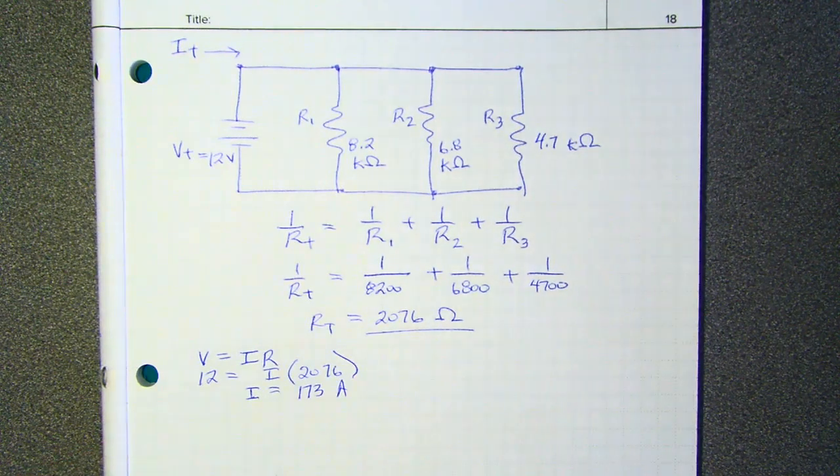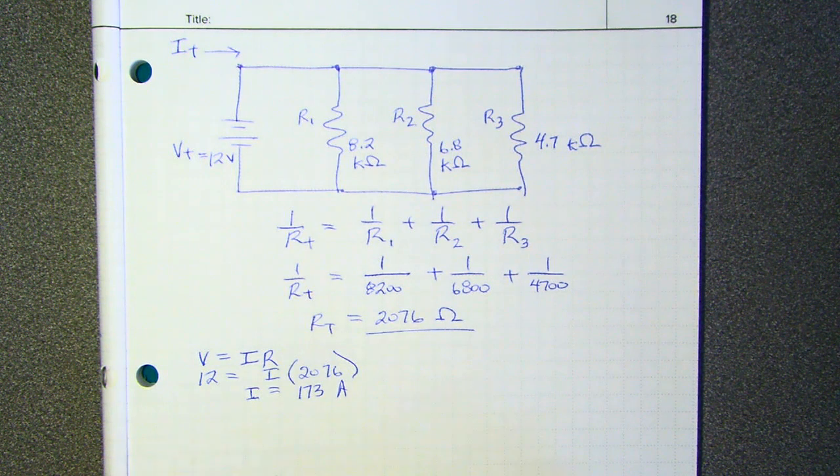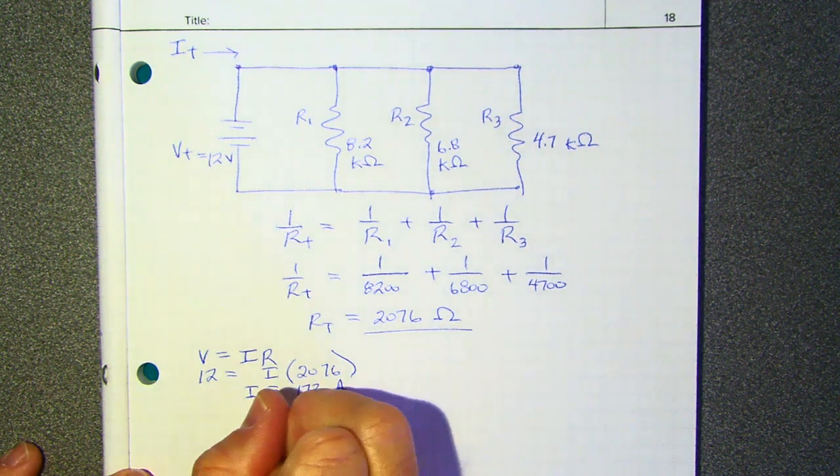Actually, I'm not sure if I like it. I'm getting nervous now. It's okay. I can be nervous. I just get a weird feeling that that might not be the right answer. But let's move on and just hope for the best. 173. So this is the total current.